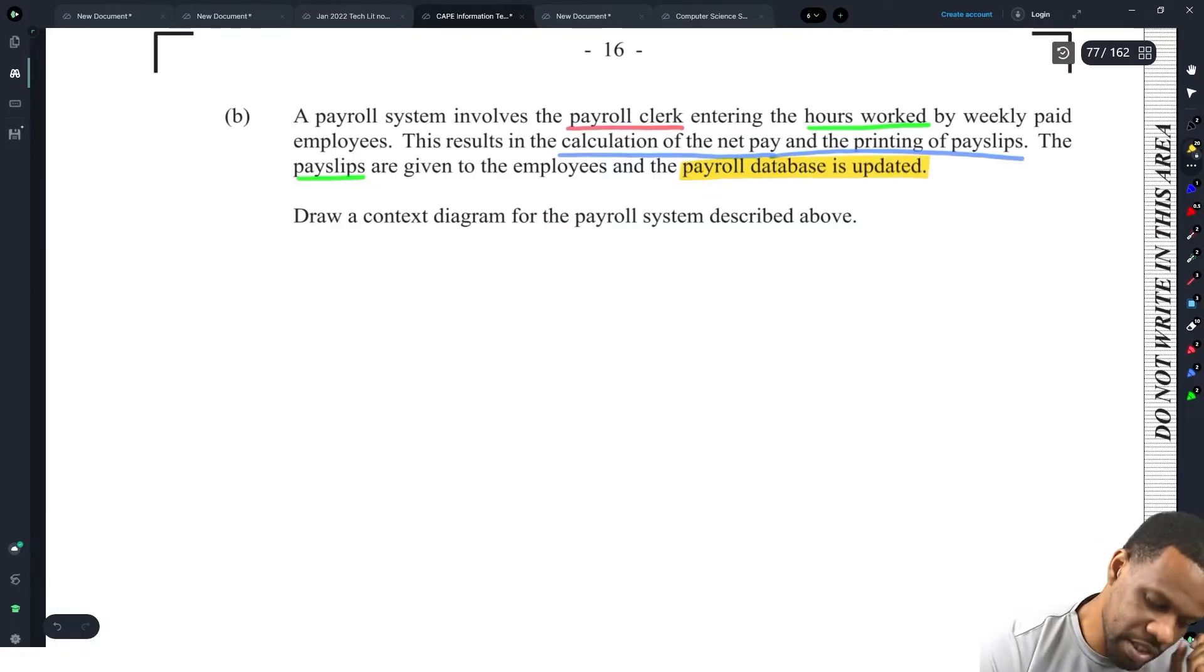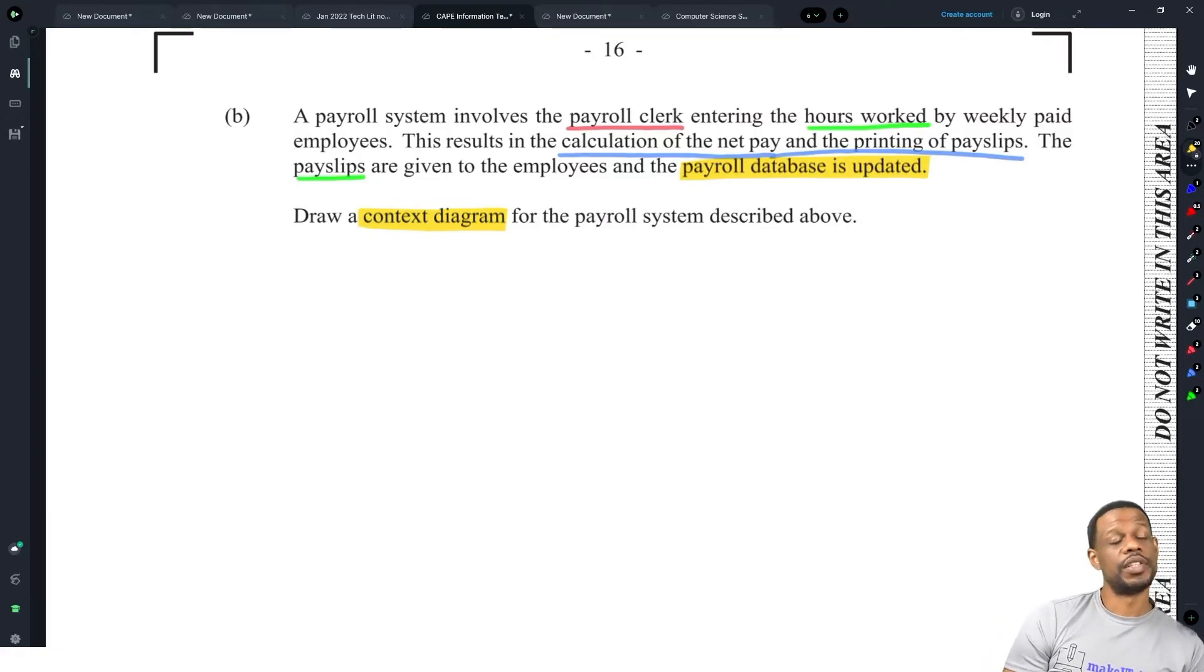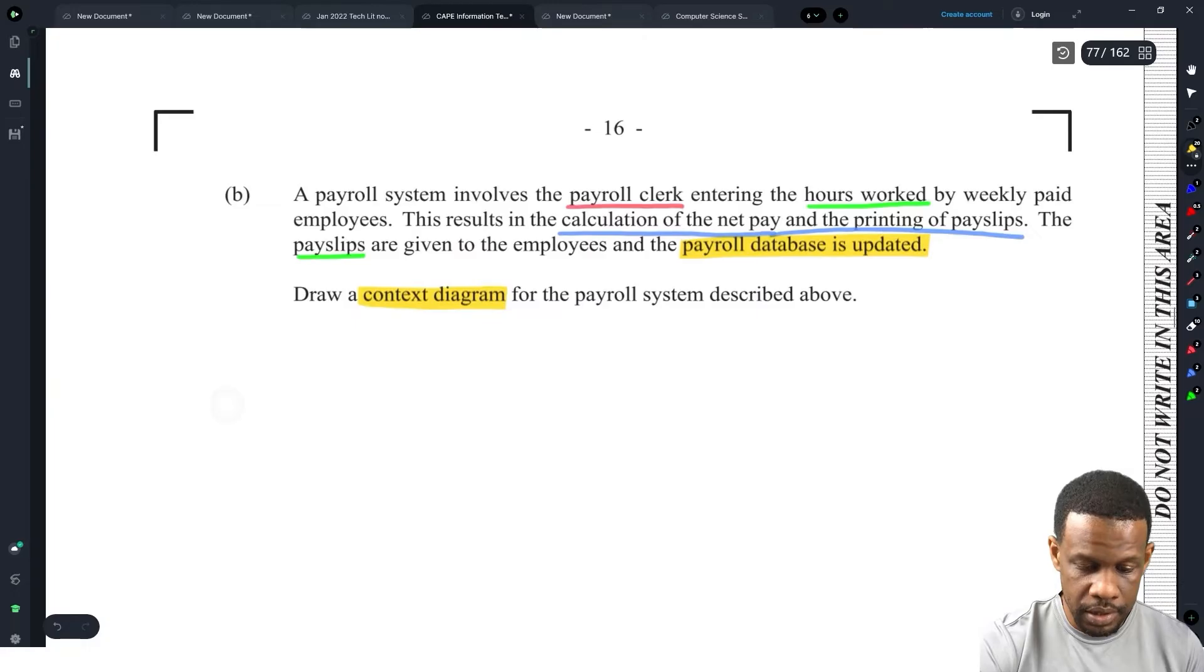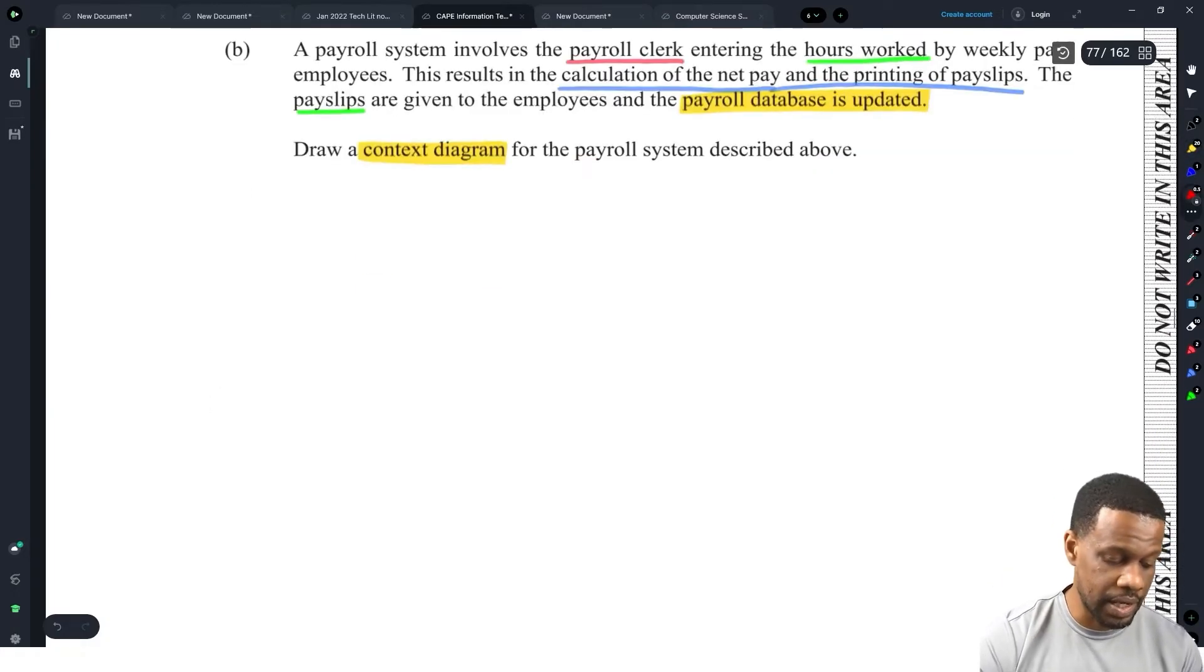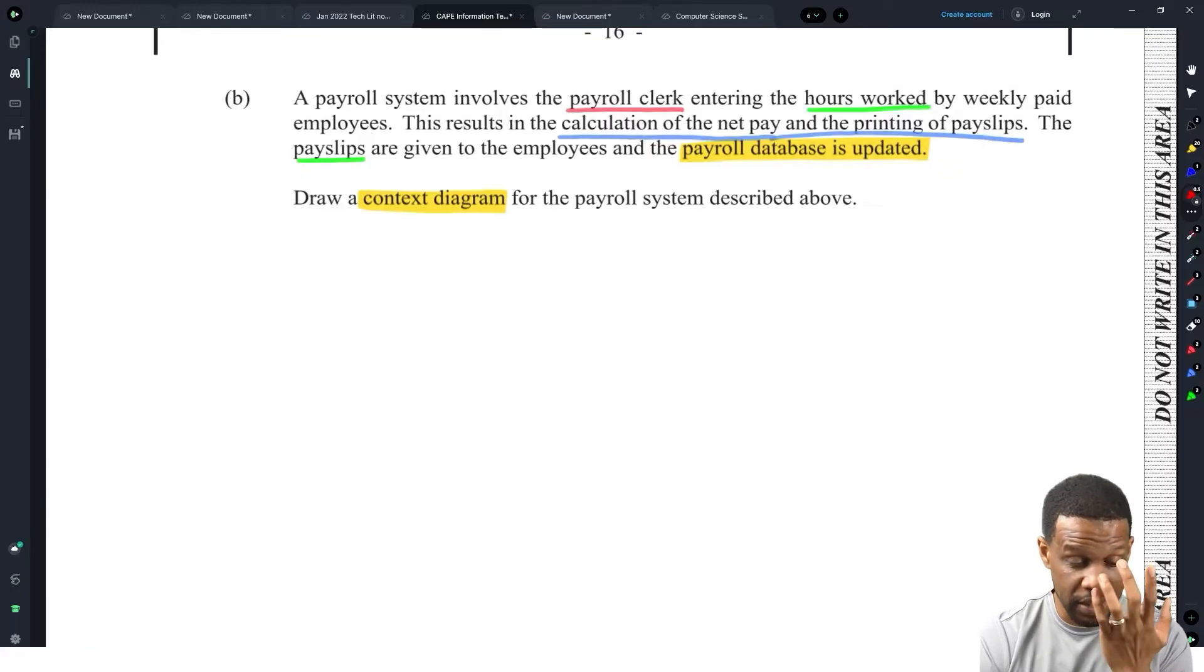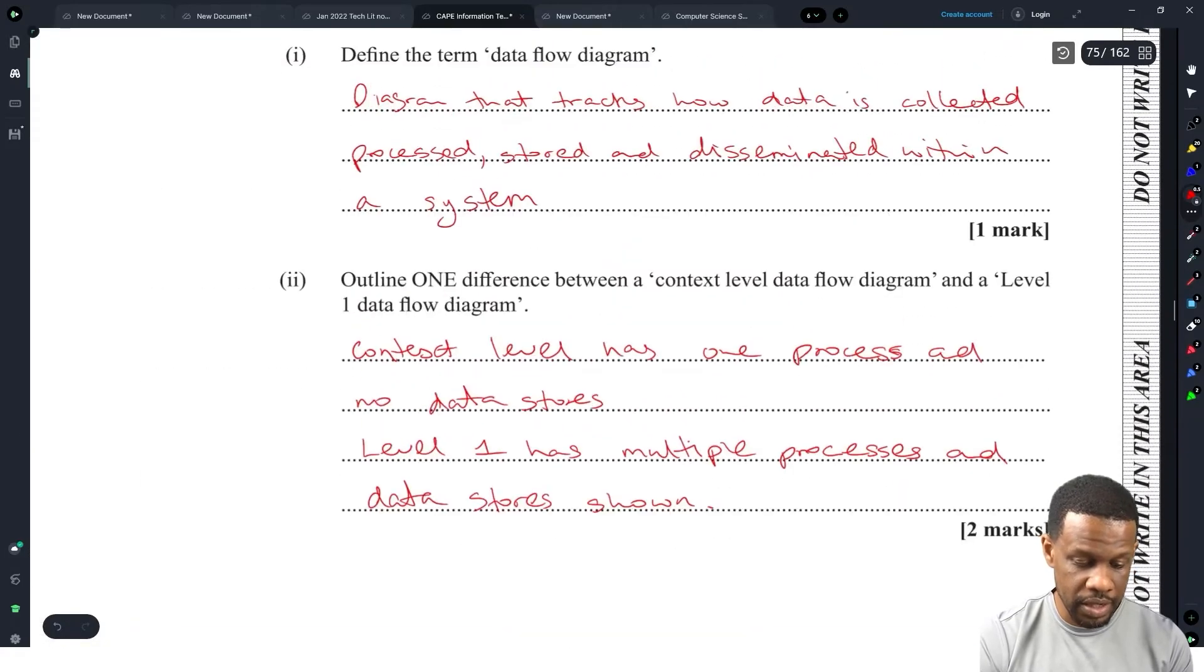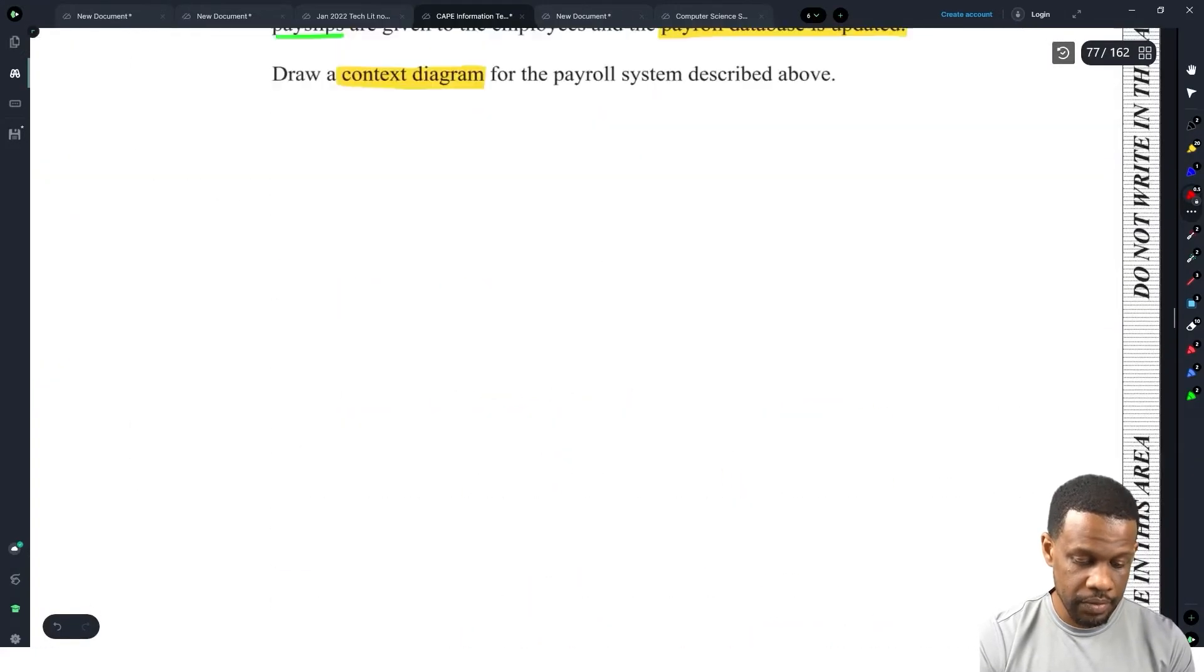You see this here? Payroll database updated. They can't say payroll database updated and then say there's a context diagram, because a context diagram is not supposed to have any data stores. How have we reached this far? It's 2022 and they're still mixing up context diagram with level 1 diagram, and they literally have questions that make you say that a context diagram does not have data stores. But for the sake of eight marks, give them what they asked for.